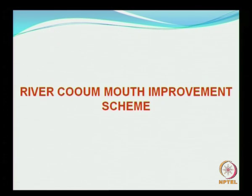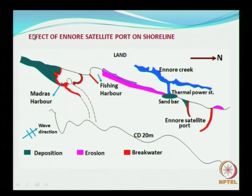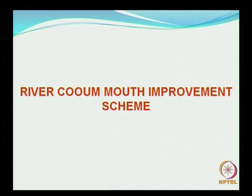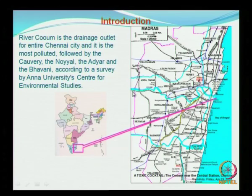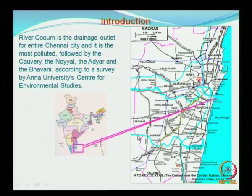There is a real problem with the river here which is called Kuom. This problem is also several decades old — similar to the coastal erosion at Ryapuram, it has been there for quite some time. This is the location shown here; this is the Chennai harbor. You can also see the Adaya river, which flows south of the Kuom river and through the city.